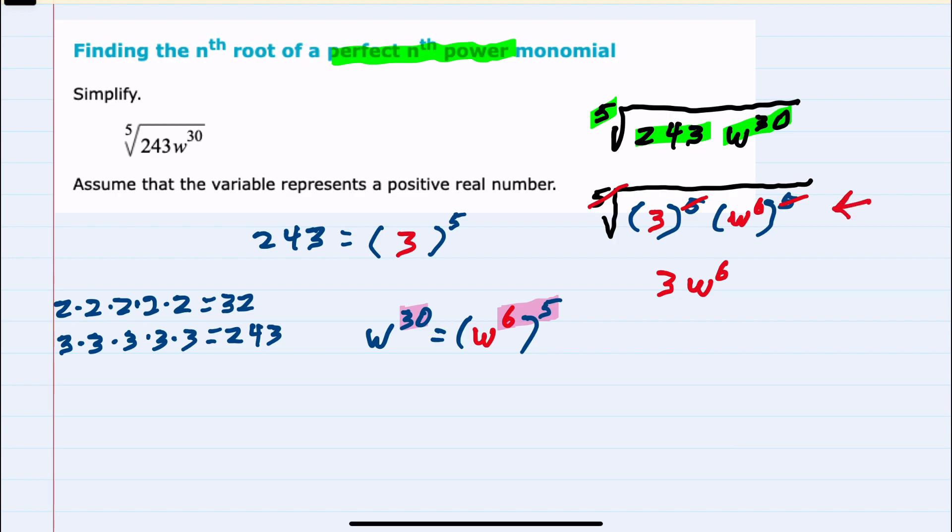Rewriting it this way has made it much more visible what's happening. Our simplified root is 3w to the sixth power.